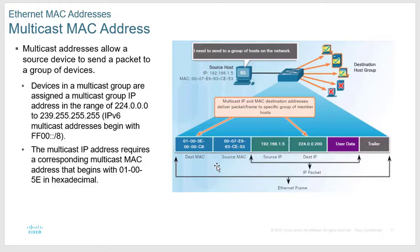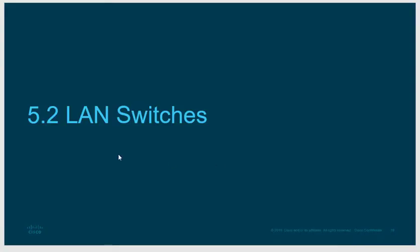In IPv6, the multicast prefix is FF00::/8 — that's the MAC address range for multicast. Make sure you have those addresses in your notes.